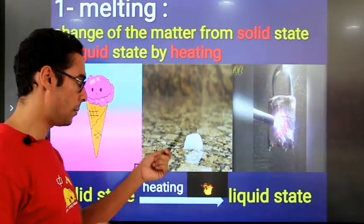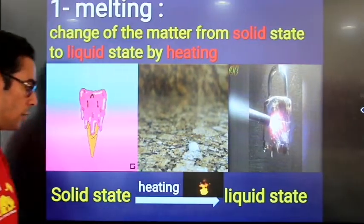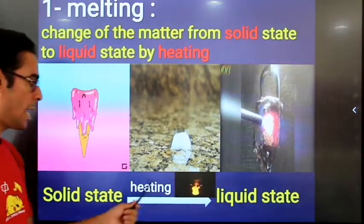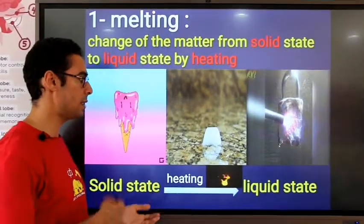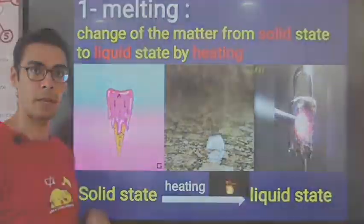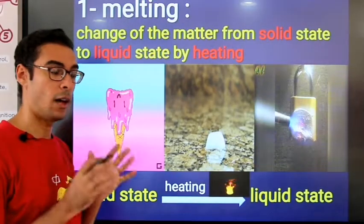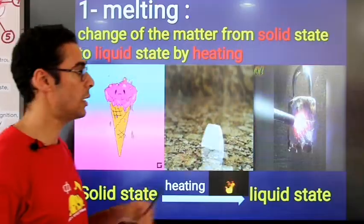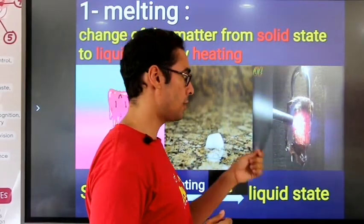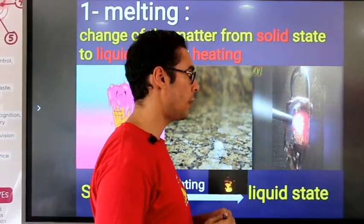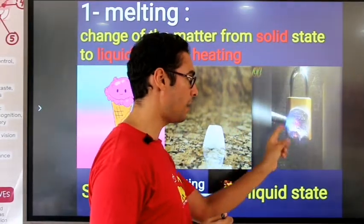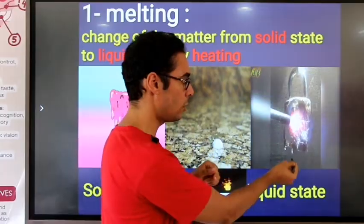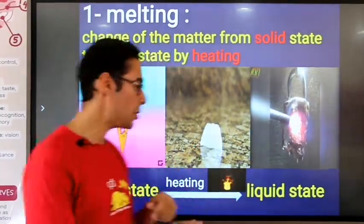Look here — the ice cube melts, so it changes from the solid state into liquid state by heating. Maybe that happens with ice or ice cream, but does it happen to iron or pieces of solids that are really hard? Let's take a look. I guess if you give a solid matter enough temperature and enough heat it melts. It totally turns from the solid state into liquid state by heating.